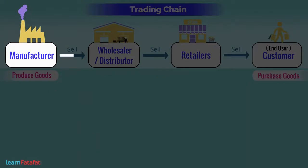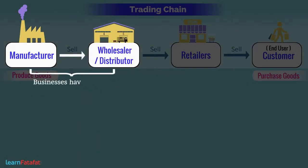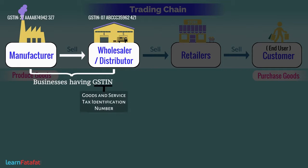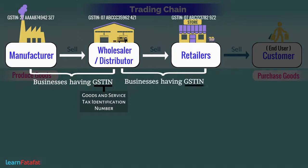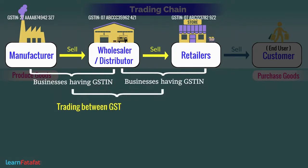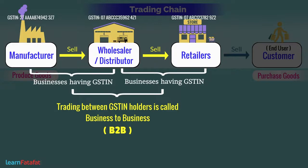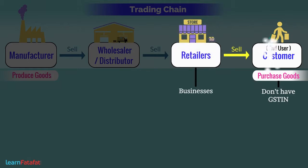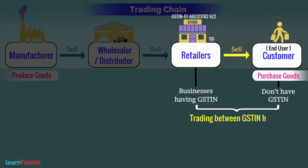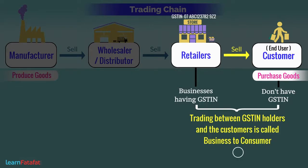The manufacturer and the wholesaler are businesses and have GSTIN. Similarly, the wholesaler and the retailer are also businesses having GSTIN. The trading between GSTIN holders is called business-to-business or B2B. But people who purchase goods for using them don't have GSTIN — they are customers. The trading between GSTIN holders and customers is called business-to-consumer or B2C.